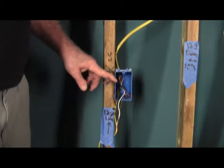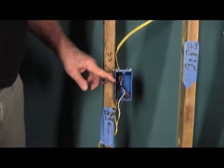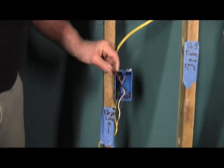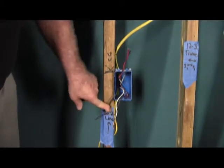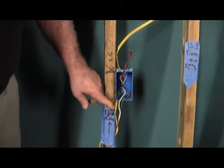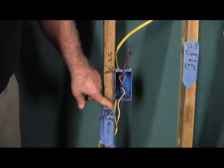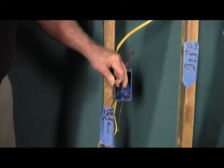Now first of all, these are our travelers which come from the 12-3. And as I said, you twist those together. This is our leg. It doesn't matter whether it's line or load.